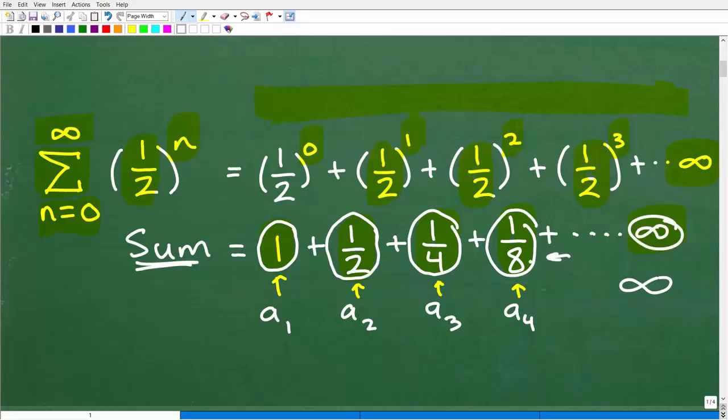If you look at the pattern, these numbers are getting smaller and smaller. If we go out to infinity, eventually it's going to be infinitely small. Conceptually, you might think to yourself, well, this is going to stop one day. Can we add this up into a finite sum?